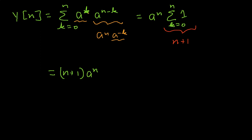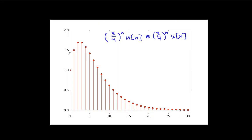So if you graph this, it looks like this. And you can see I now have three-fourths raised to the n convolved with itself. It starts out at 1, goes up, and then goes back down.